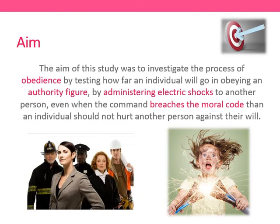When given an extreme command from a legitimate authority figure — somebody in a position of power over you — subordinates, the people that authority figure has power over, will adopt something known as an agentic state. This means they become the instrument for carrying out another person's wishes. Adoption of this agentic state can account for horrific acts committed in the name of obedience — things like World War II atrocities and Rwanda. People do these things not because they want to, but because they've been told to and are acting as an agent of somebody else's will.